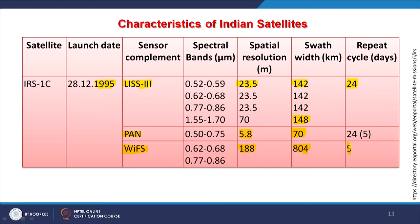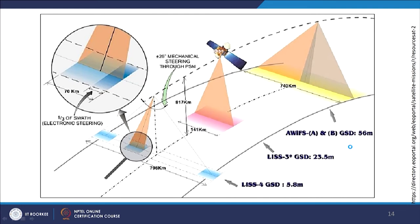IRS-1C also carried the WiFS sensor, which had a swath of 804 kilometers but a spatial resolution of 188 meters, and therefore the repeat cycle was only 5 days. This again demonstrates the key relationship: poor spatial resolution gives very large swath width and high temporal resolution. There are examples from the Indian program: WiFS at 56 meters, LISS-3 at 23.5 meters, and LISS-4 at 5.8 meters, with corresponding swath widths — LISS-4 covering a very small swath at high resolution, while WiFS covered a very large swath.